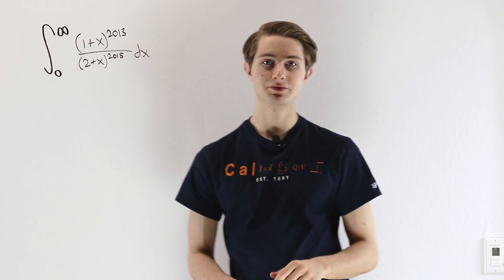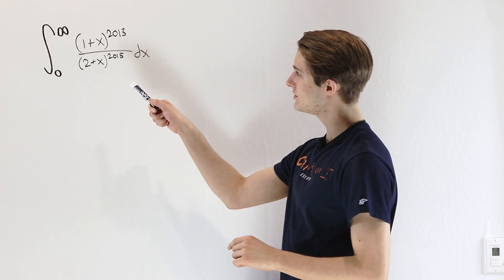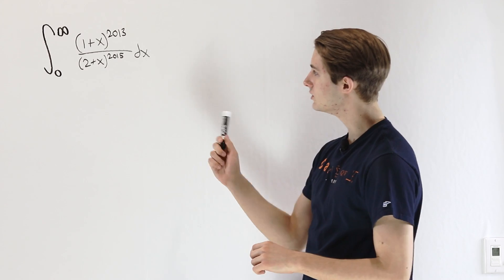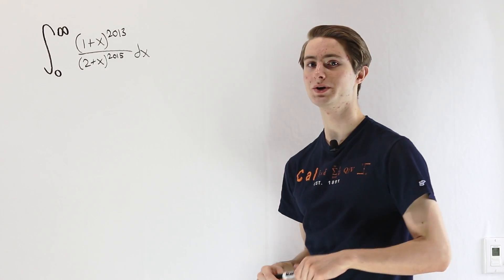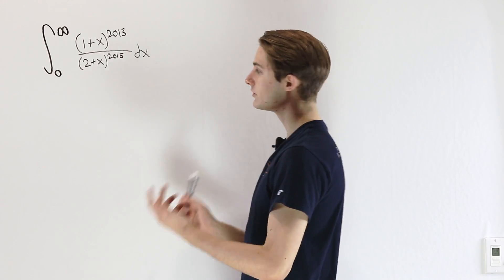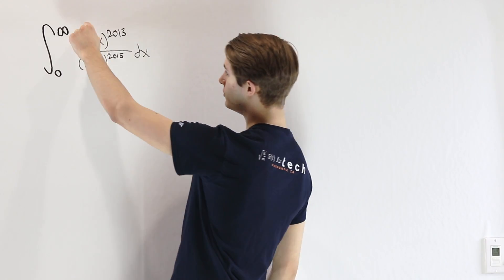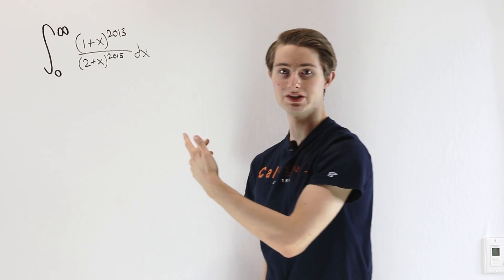So we are going to do the integral from 0 to infinity of (1+x)^2013 over (2+x)^2015. Now the first thing that we notice with this integral is that there's 1+x and 2+x in the inside.